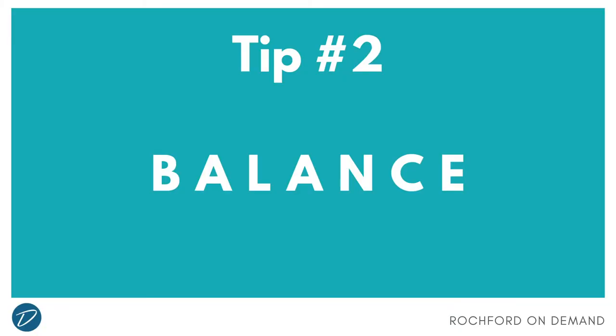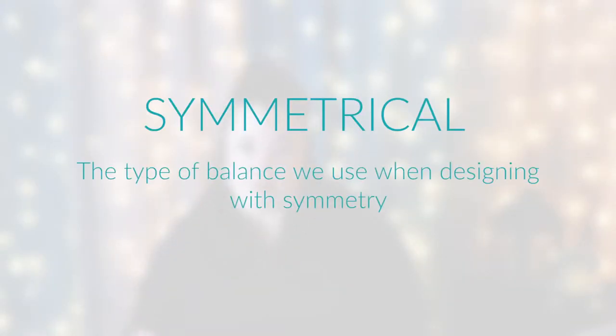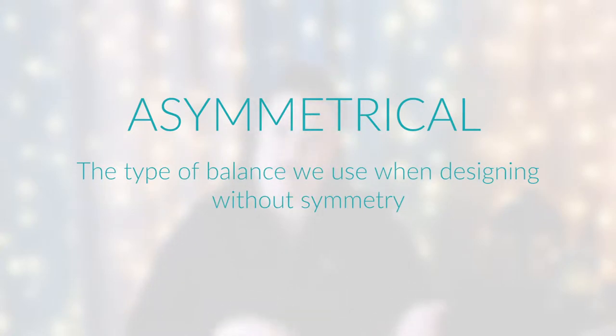Number two is balance. When we have multiple items that are part of our design, we always need to make sure that they are balanced in some way. We have two main types of balance. The first is symmetrical balance — think of a mirror image. The other type is asymmetrical balance, which is just the opposite; we are balancing without using symmetry.